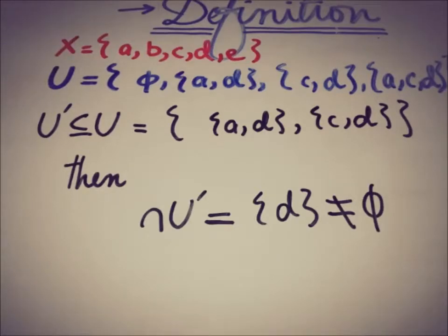Of course, this finite intersection property can be applied on any topological space in order to check whether there is a collection of subset of x that satisfies finite intersection property or not, in order to be taking out a finite subcollection u prime of that collection u.